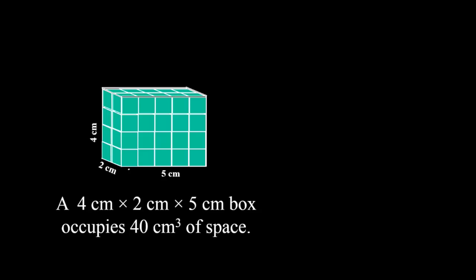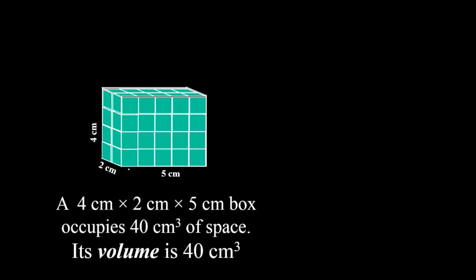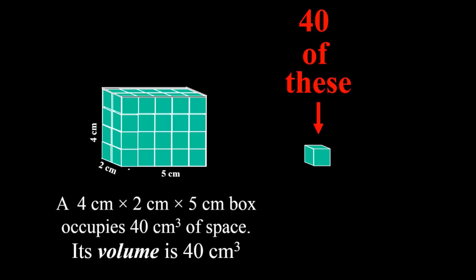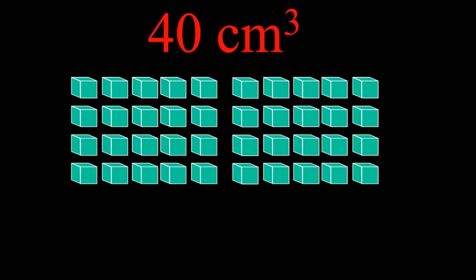We've filled up the box with as many one-cubic-centimeter cubes as we can. What that turns out to be is simply the measurements of each side multiplied: 4 centimeters times 2 centimeters times 5 centimeters gives us 40 cubic centimeters of space. So the volume is 40 cubic centimeters — 40 of these one-cubic-centimeter boxes. Let's count all the boxes — yep, there are 40 cubic centimeters in that 4 by 2 by 5 centimeter box.